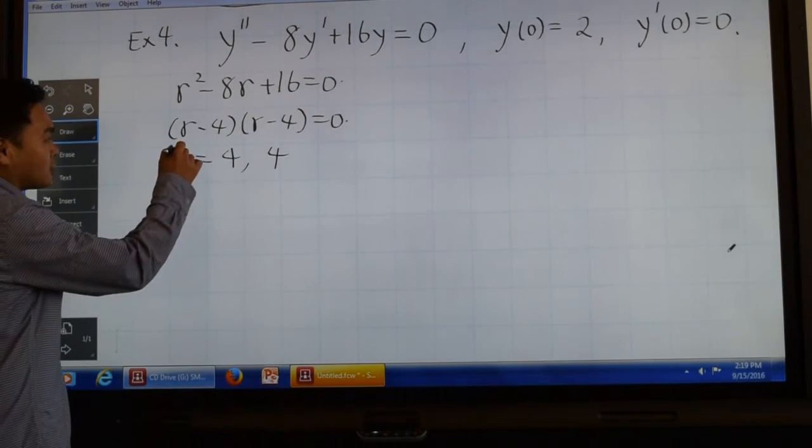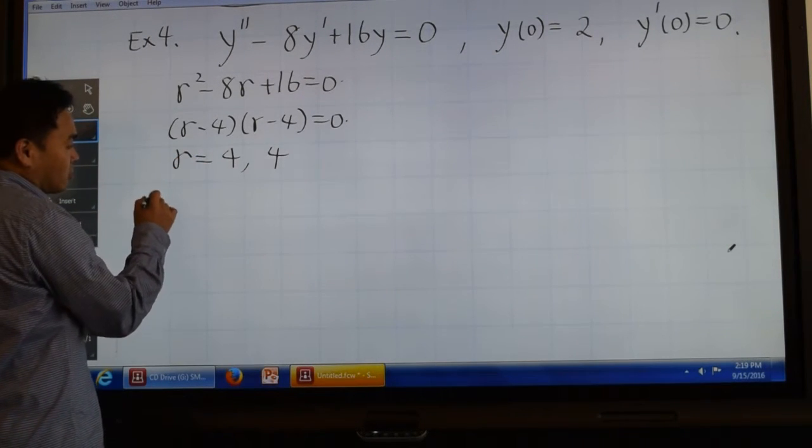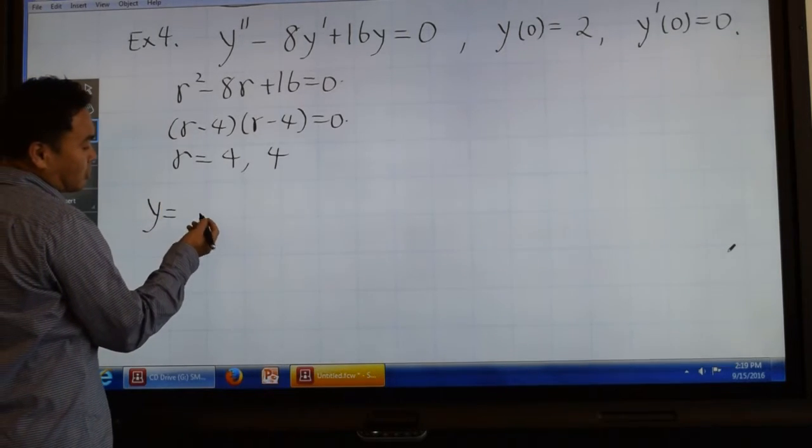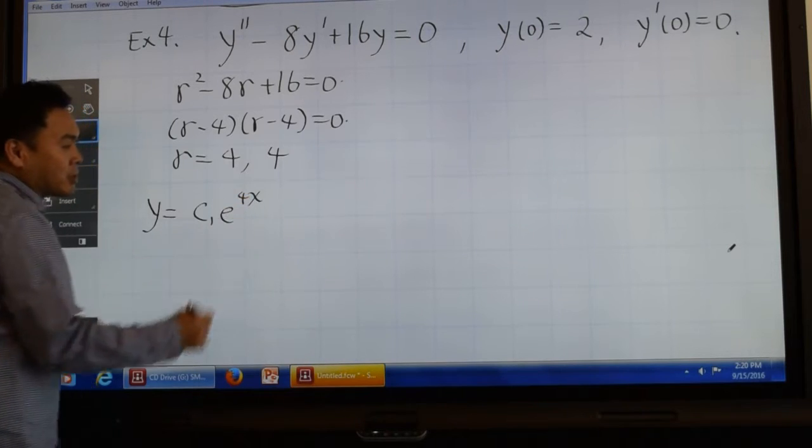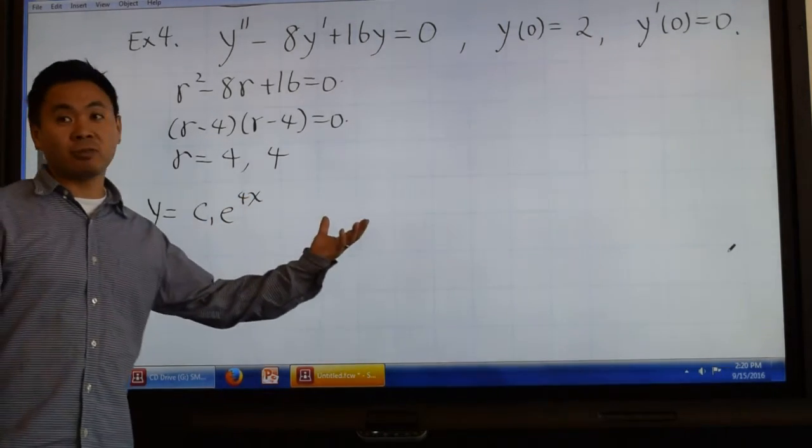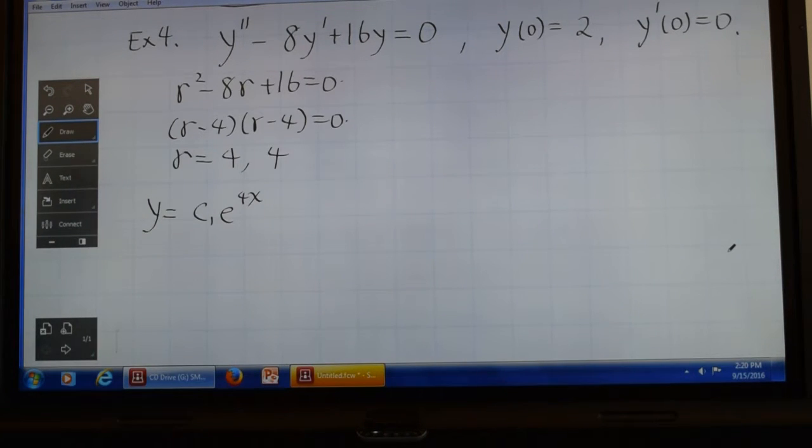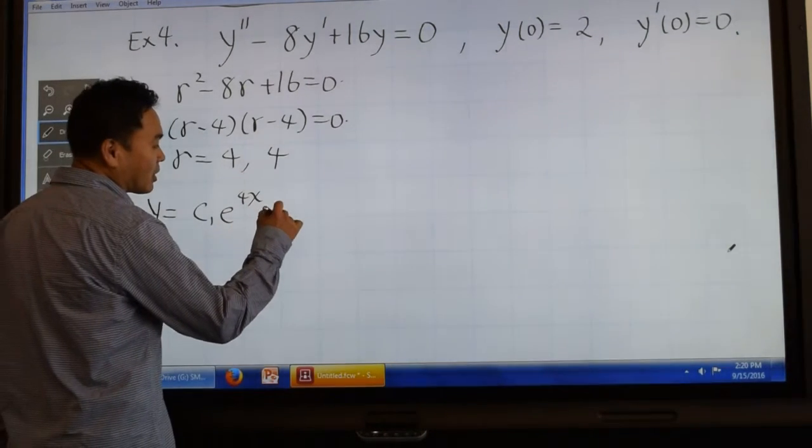In that case, we learned that your general solution is you take c1 e to the 4x as before, but because writing another e to the 4x doesn't give you a linearly independent solution, what you do is, for the second one,